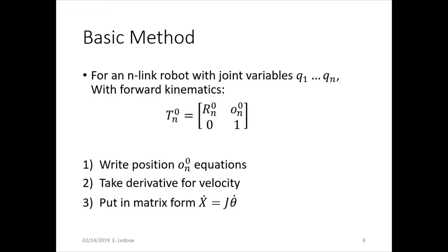So to do that, first step is write position equations. These are the equations that get the numbers in the position spot of the homogeneous transformation. Then we take the derivative of those equations to get velocity and put it in matrix form, x dot equals j theta dot, where x dot is end effector velocity and theta dot is joint speeds.